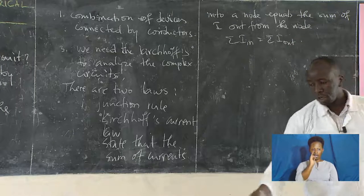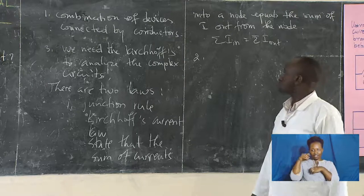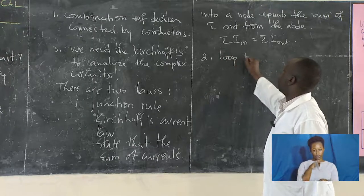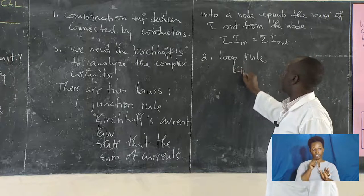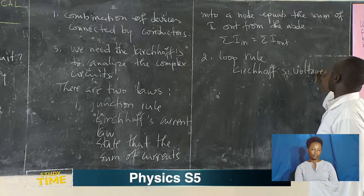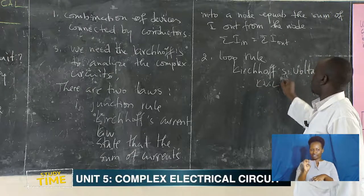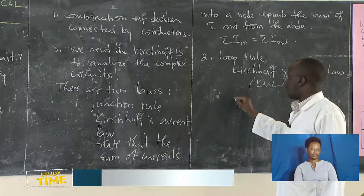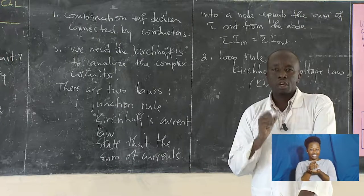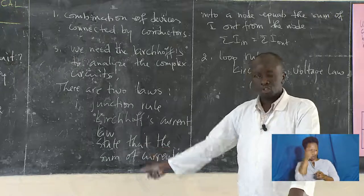The second law is the voltage law — also written as KVL — and it talks about the conservation of energy, specifically electric potential energy, whereas the first law is about conservation of charge. The voltage law states that the sum of potential differences around a closed network or closed circuit equals zero.